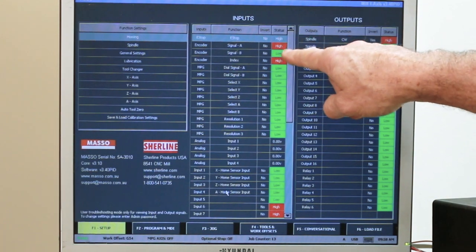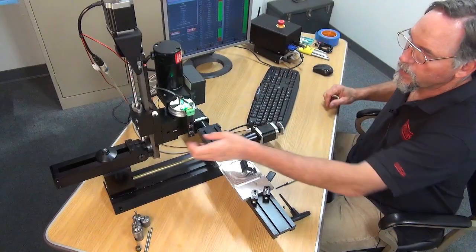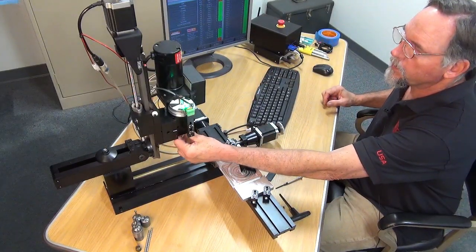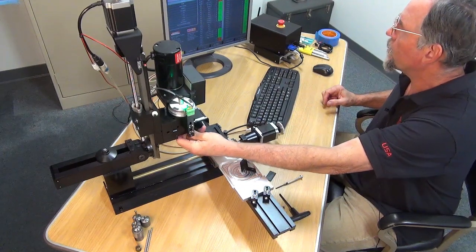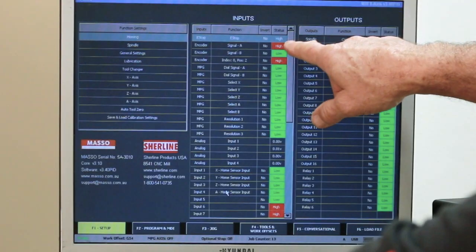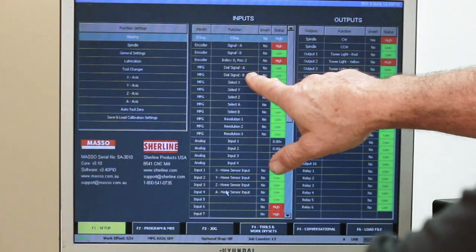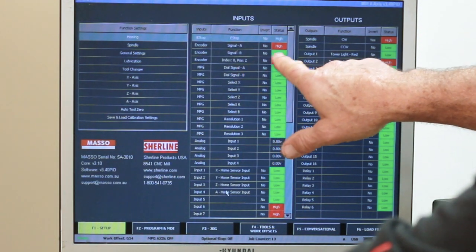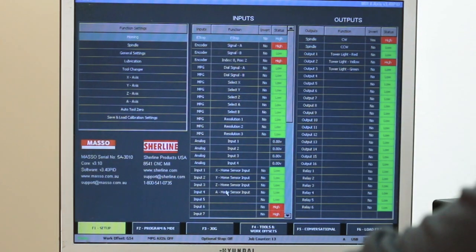These are my readouts for my optical encoder. So if I turn my spindle by hand counter-clockwise the same way it goes, you'll see the signal A, signal B, and index 0 lights going on. For each position, it'll tell me what position I'm at.